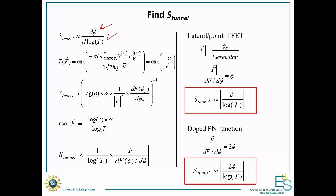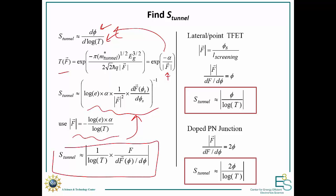If we do that, we get good insight into how barrier thickness modulation performs. The derivative of the potential with respect to the log of the tunneling probability is evaluated as follows: the tunneling probability is a bunch of constants over the field. Plugging this in and taking the derivative, we get a large expression. Back-solving for the field in terms of the tunneling probability and substituting gives us a powerful expression: the steepness due to tunneling barrier thickness modulation is 1 over the log of the tunneling probability, times the field divided by its derivative.